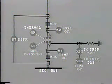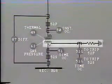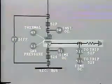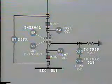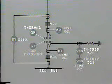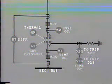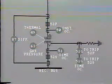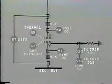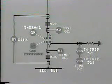What else does the diagram tell us? We can see that the primary is delta connected and the secondary is Y grounded through a resistance. The circuit breakers are represented by 52P (primary) and 52S (secondary). Looking up our reference list, we find that the transformer itself is equipped with a thermal relay, 49, and a gas pressure relay, 63.